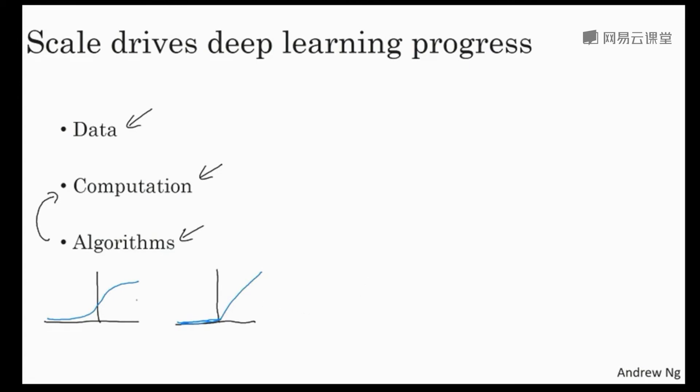But it turns out that one of the problems of using sigmoid functions in machine learning is that there are these regions here where the slope of the function, where the gradient is nearly zero. And so learning becomes really slow. Because when you implement gradient descent and the gradient is zero, the parameters just change very slowly and so learning is very slow. Whereas by changing what's called the activation function of a neural network to use this function called the ReLU function or the rectified linear unit, the gradient is equal to one for all positive values of input.